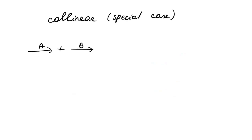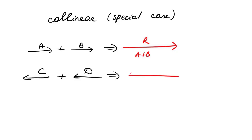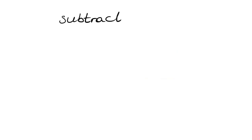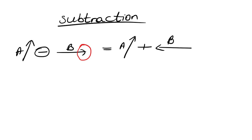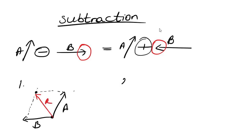Collinear addition is the special case where vectors are parallel to each other and we simply add them. The resultant vectors are equal to the addition of the vectors — simple as that. Subtraction of vectors is very similar to addition; the only difference is that you change the direction of the vector you are subtracting. Here I subtract vector b, so I change its direction to the opposite side, and then I can solve this using the parallelogram law or the triangle rule.